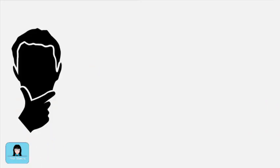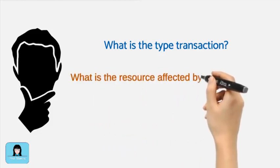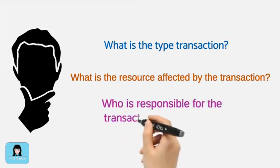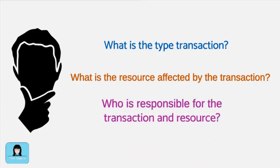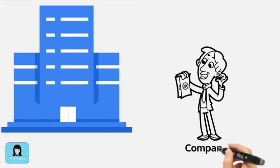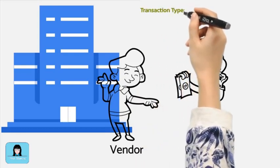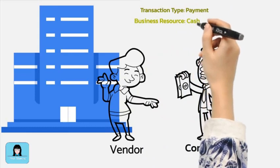In AIS, it is vital to identify the functional unit responsible for each business resource and the type of transactions involving these resources that are of relevance to the business function. For example, the company sends a check to a vendor for the goods purchased last week. The type of transaction involved is payment, the business resource affected is cash, and the responsible functional unit is finance.